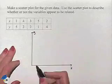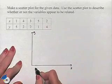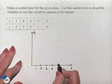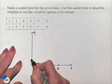We can see that our values go from 1 to 5. So we're going to have 1, 2, 3, 4, 5 along both axes.